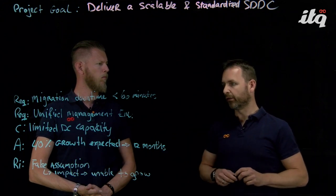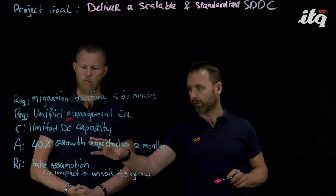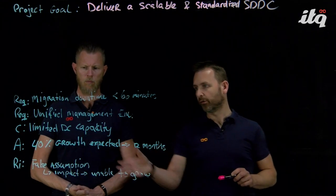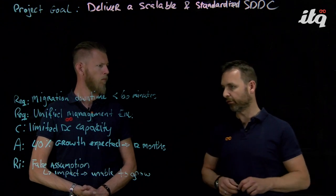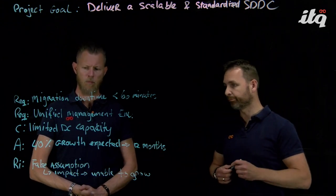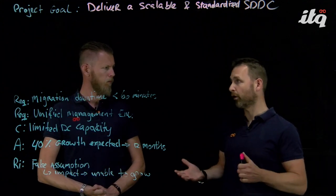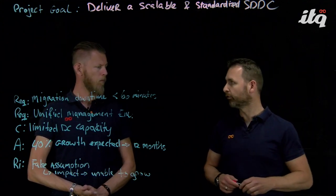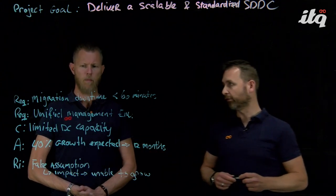The biggest risk here is making sure that we are able to support the business in their growth ambitions. There's a 40% growth expected, which means that if the actual growth exceeds that 40%, then we won't be able to accommodate because we don't have any capacity in the data center.